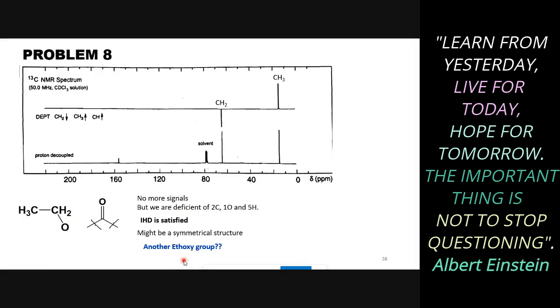And is there another ethoxy group? So if you add another ethoxy group, we are going to add two carbons, which we are missing, one oxygen, which we are missing, and five hydrogens. We are missing five hydrogens as well. So we can add another ethoxy group to this carbonyl on the other side, and this would be the most probable structure now.